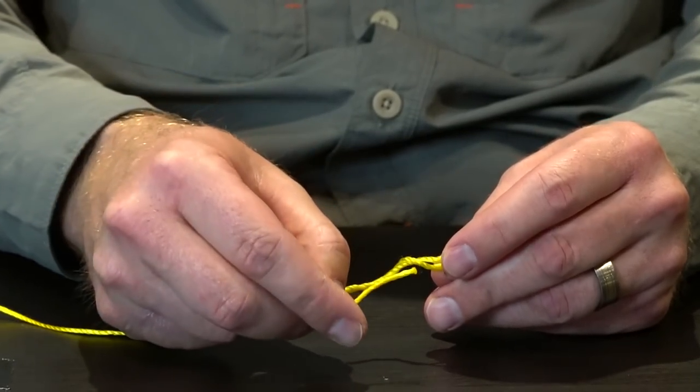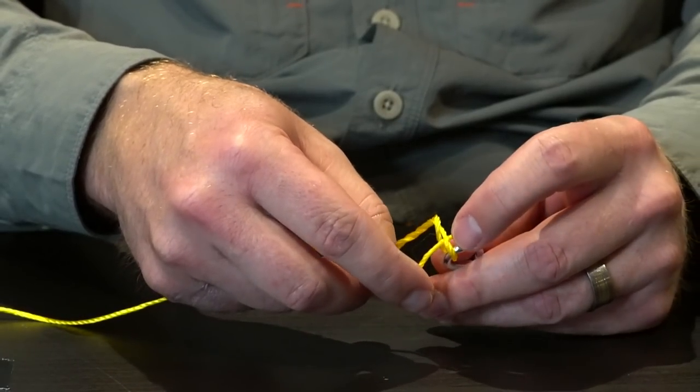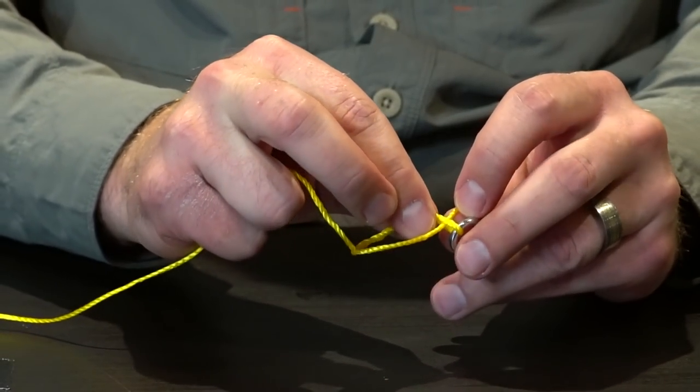Once you're done making those turns you take the tag end and pass it through the very first loop that's closest to the eye of the hook.